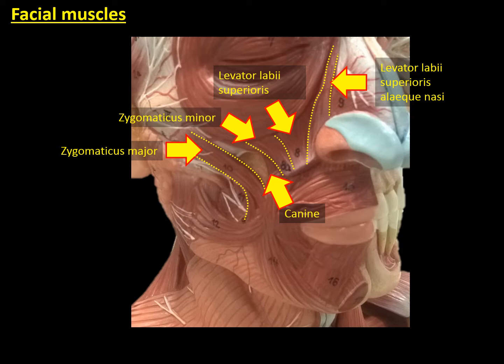Inferior to the zygomaticus major, we can see the risorius. In between the risorius and the zygomaticus major, we can see part of the buccinator muscle.